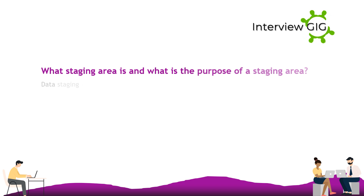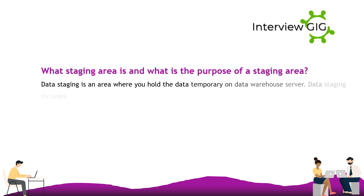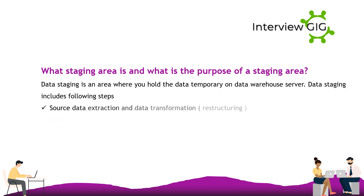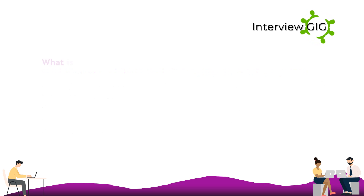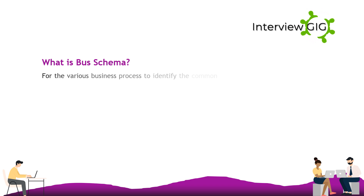A staging area is where data is held temporarily on the data warehouse server. Data staging includes the following steps: source data extraction, data transformation, restructuring, data cleansing, value transformation, and surrogate key assignments.